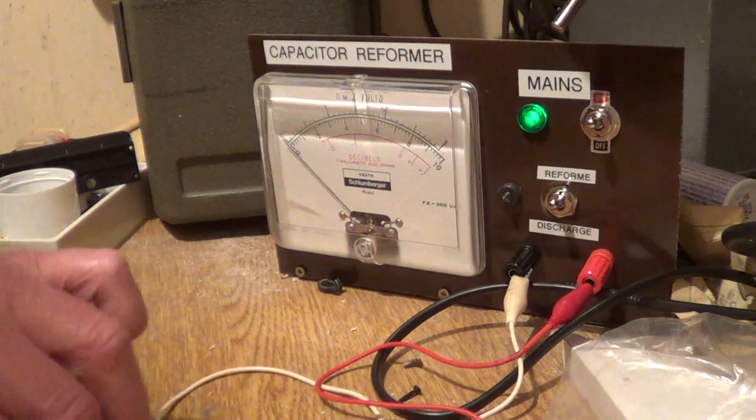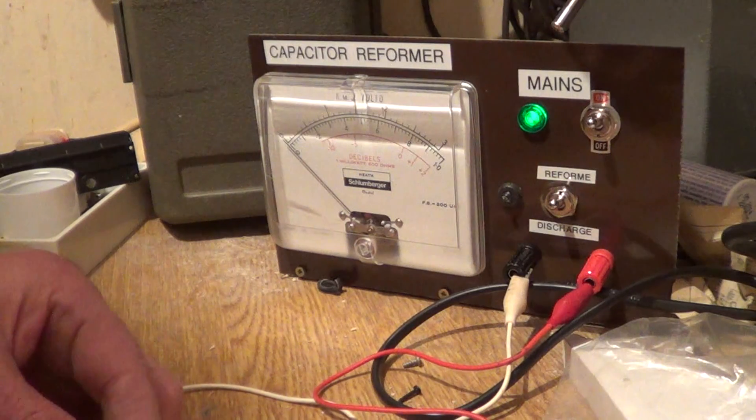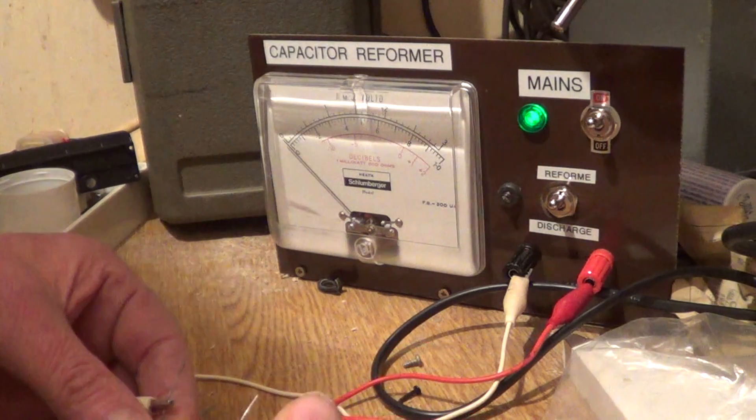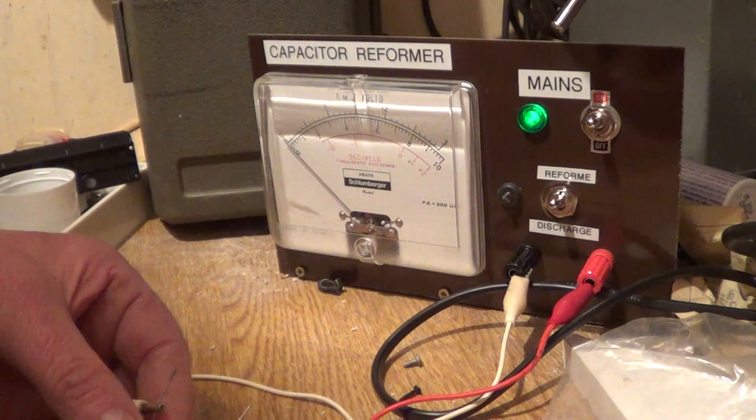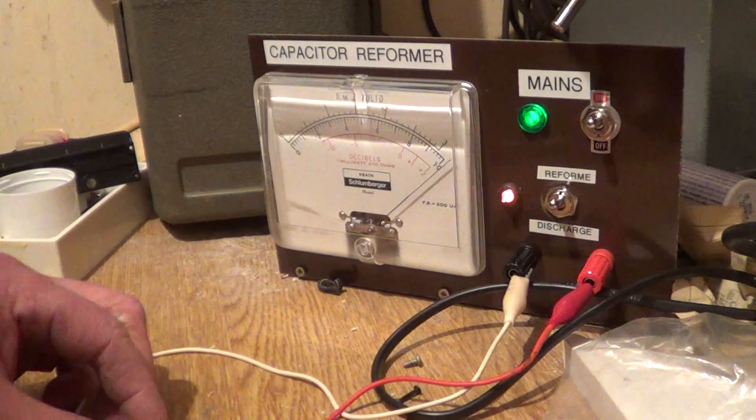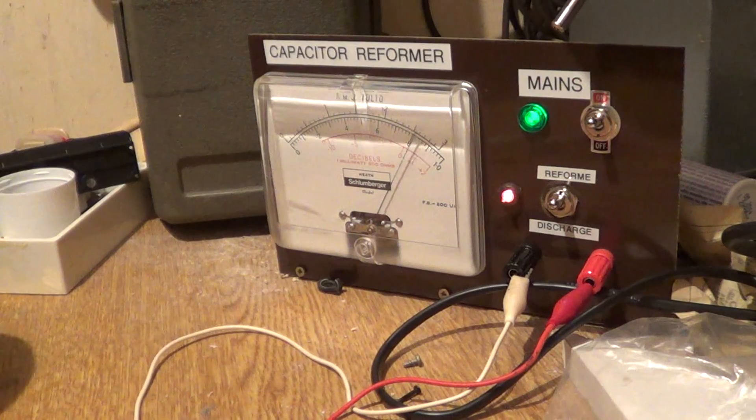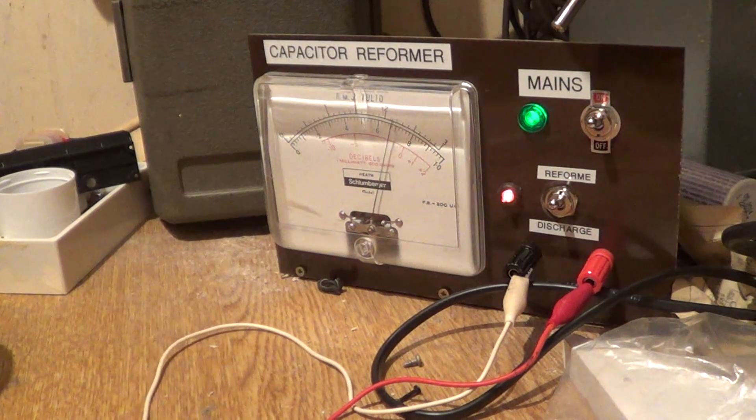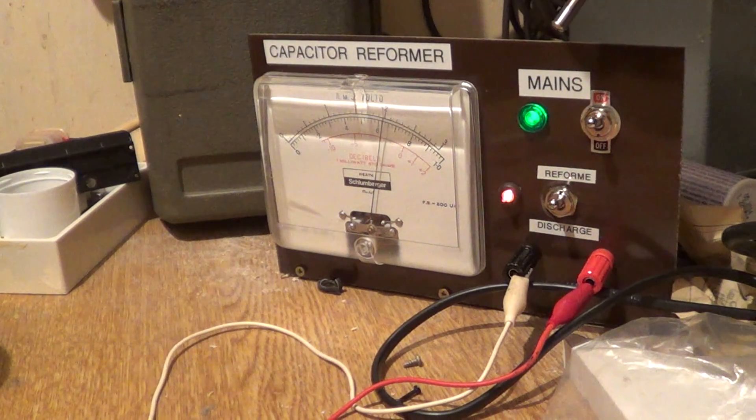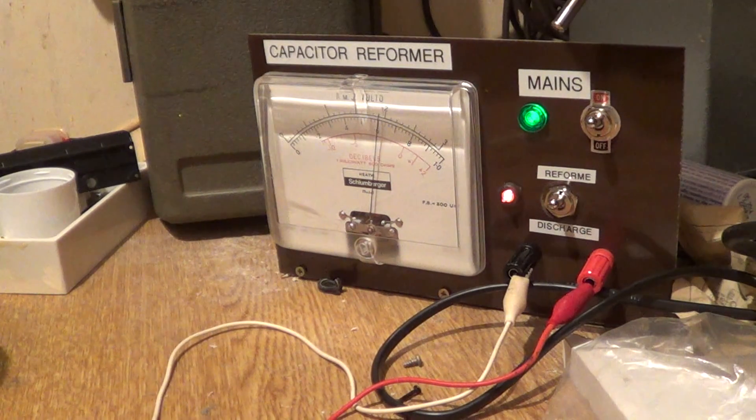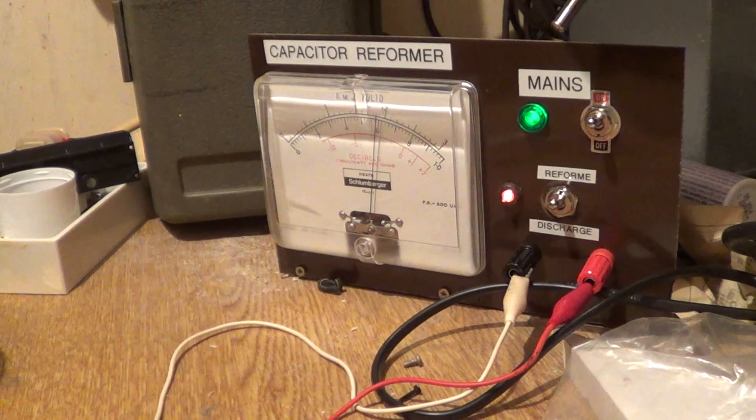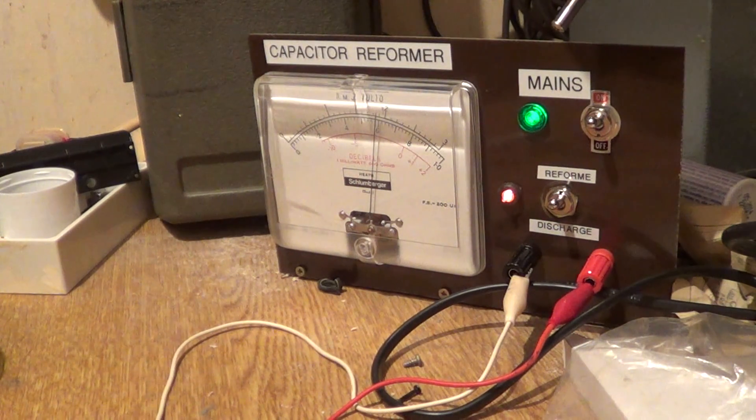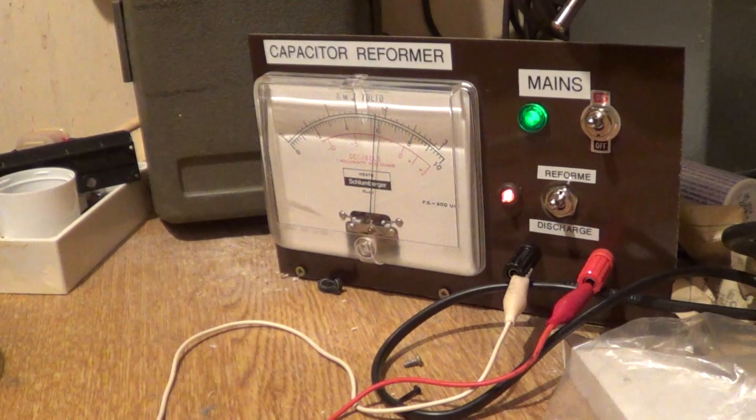This is a Russian paper-in-oil capacitor which is new old stock. Flick on the meter now. As we can see it started off with a high current and it's gradually dropping down, so in theory this should reform it.